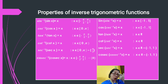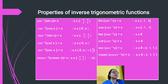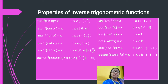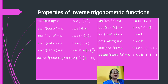Next property: sin(sin⁻¹ x) = x. Here also sin and sin⁻¹ can be cancelled, but we must write x belongs to [−1, 1] — always mention the range. If you do not mention it in your solution, marks will be deducted.